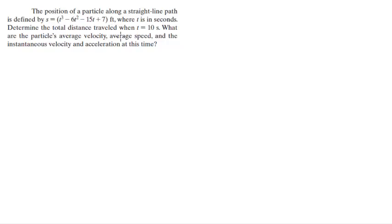For more videos visit ForTheSakeOfEducation.com. The position of a particle along a straight line path is defined by s = t³ - 6t² - 15t + 7 feet, where t is in seconds. Determine the total distance traveled when t = 10 seconds.